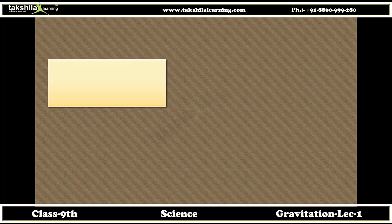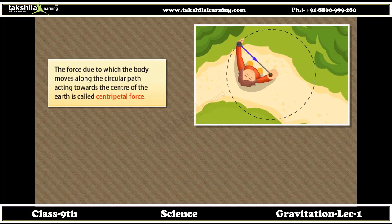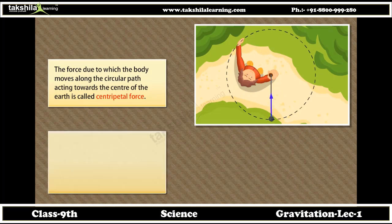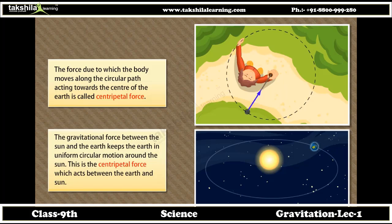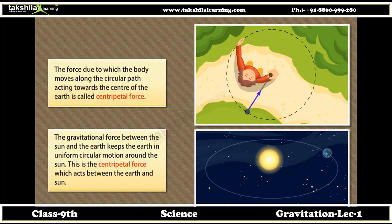Centripetal force: the force due to which the body moves along the circular path, acting towards the center of the earth, is called centripetal force. The gravitational force between the sun and the earth keeps the earth in uniform circular motion around the sun. This is the centripetal force which acts between the earth and the sun.